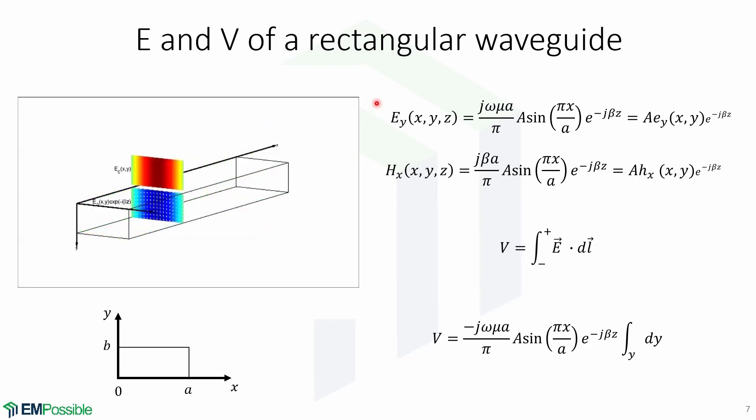Remember that in your waveguide lectures, the transverse field components are given by these expressions, where this is the Y component of the electric field and this is the X component of the magnetic field. We can obtain the voltage by applying the same integral to the electric field as with the arbitrary TEM lines. We obtain this expression for the voltage.